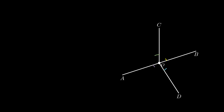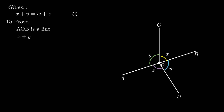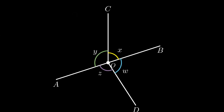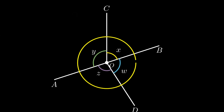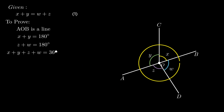Moving on to the next one: it is given that the sum of angle x and y equals the sum of angle w and z. We need to prove that AOB is a line, that is the sum of angle x and y equals 180 degrees, or the sum of angle w and z equals 180 degrees. From the figure, the sum of all angles x, y, z, and w equals 360 degrees as they form a complete angle. Using equation number 1, the sum of w and z can be written as the sum of x and y.